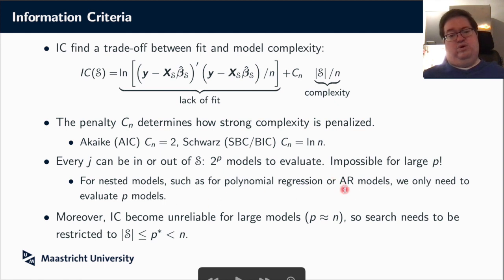Now the big problem, of course, is if you need to evaluate this for every model, it means that you must, for every regressor, every j, decide do you put it in or out of your model, which means you have 2 to the power p models to evaluate, which is of course doable if you have five regressors. But if you have a hundred of them, it's going to become an awful mess. So if p is large, this is simply not a feasible strategy.